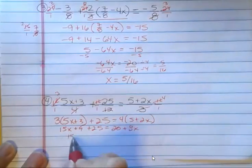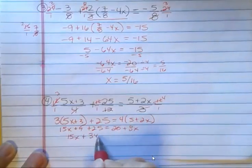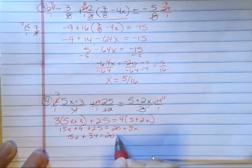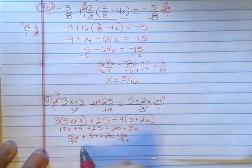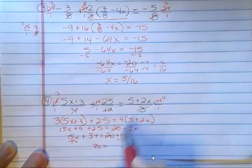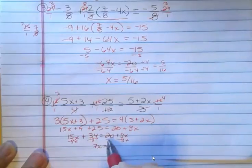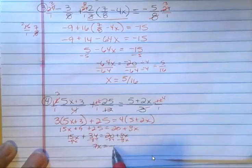So I have 15x plus 34. I'm going to subtract 8x from both sides. That's going to give me 7x. And I'm going to subtract 34 from both sides. And that's going to give me negative 14.